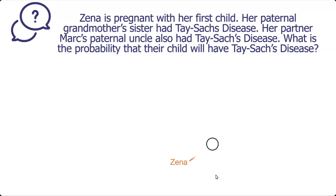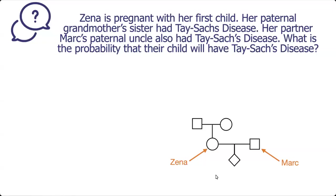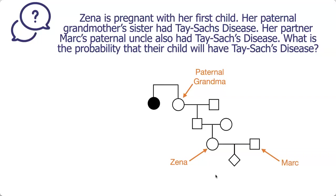Let's start drawing our pedigree, beginning with Xena, shown as a circle, and her partner Mark, shown as a square. Xena is pregnant and we do not know the sex of the child, so we draw a diamond. These are Xena's parents. Her paternal grandmother is drawn, and the grandmother's sister is shaded because she is affected with the trait.